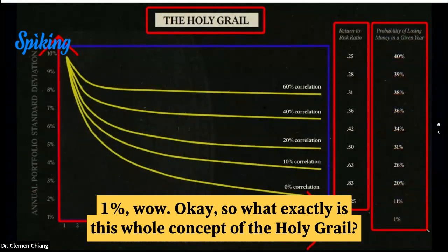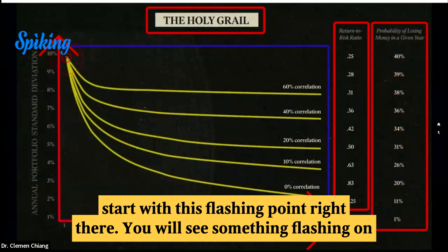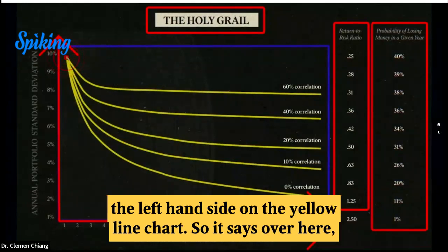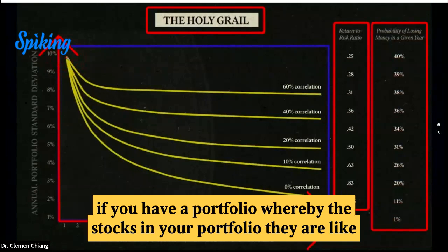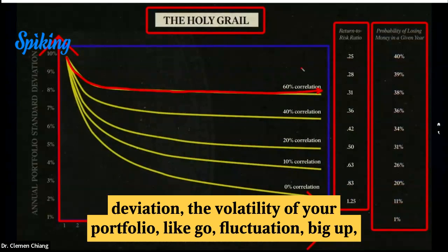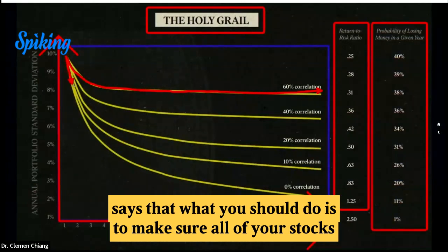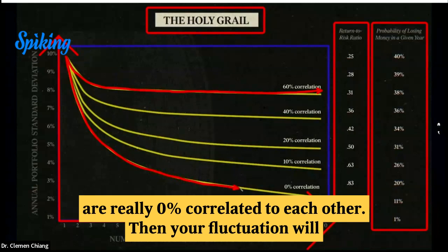So what exactly is this whole concept of the holy grail? It starts from here. You will see something flashing on the left-hand side on the yellow line chart. If you have a portfolio whereby the stocks are like 60% correlated, then what you're going to have is a very, very high standard deviation — the volatility of your portfolio, like big fluctuations, big up, big down and all that. But in an ideal perfect holy grail portfolio, he says that what you should do is to make sure all of your stocks are really 0% correlated to each other.